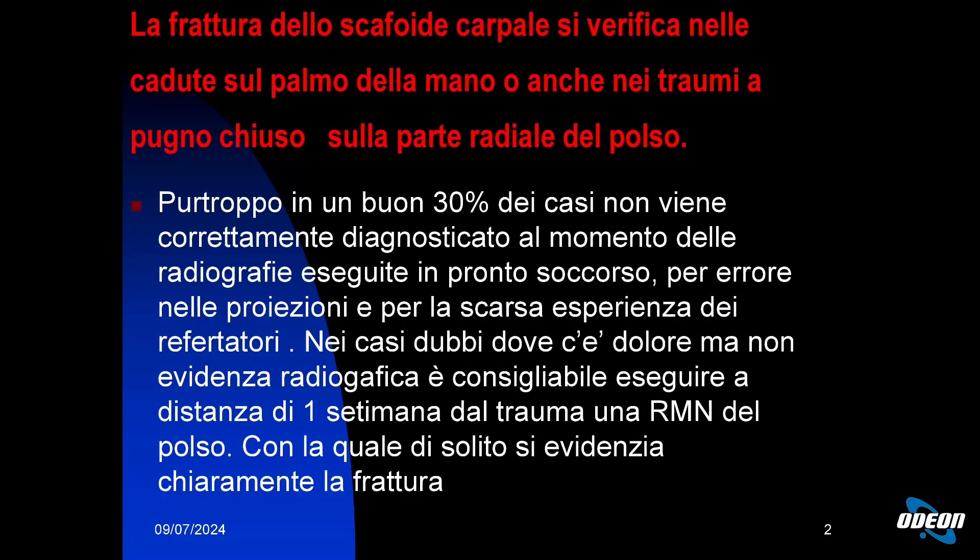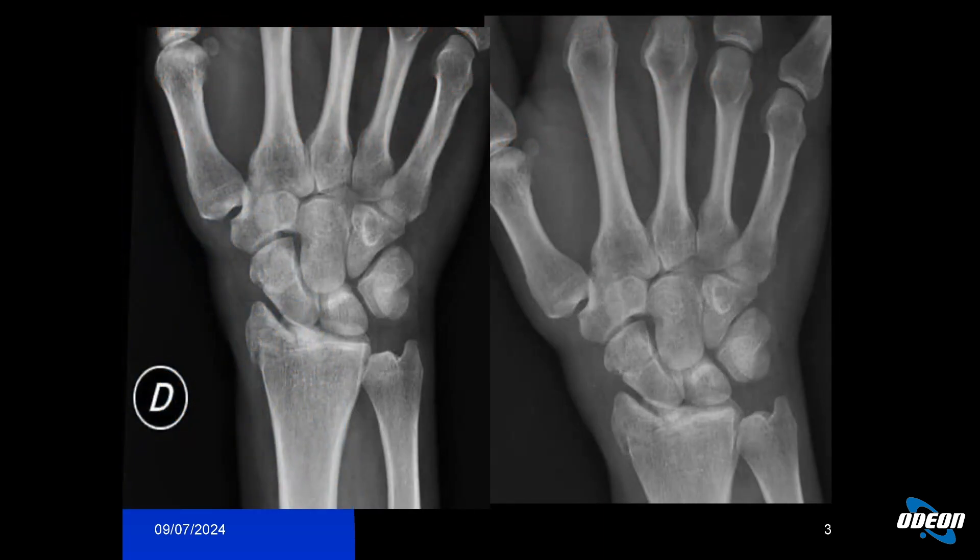Unfortunately, in the emergency room, X-rays are often taken in a hurry. As we can see in this slide, on your left is an X-ray where the scaphoid appears intact, while on the right, taken from a slightly different projection, a small line is visible in the middle of this small bone. There is also a fracture of the radial styloid here, making this a wrist that is particularly difficult to treat, as both fractures can progress to arthritis if not properly addressed.